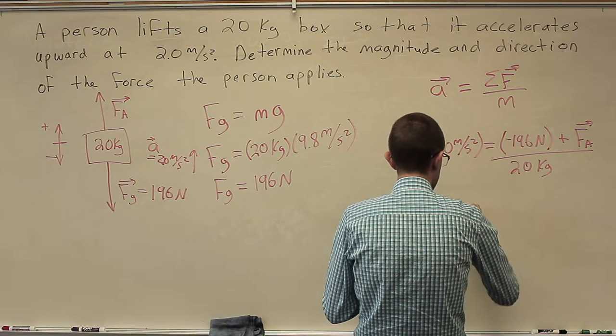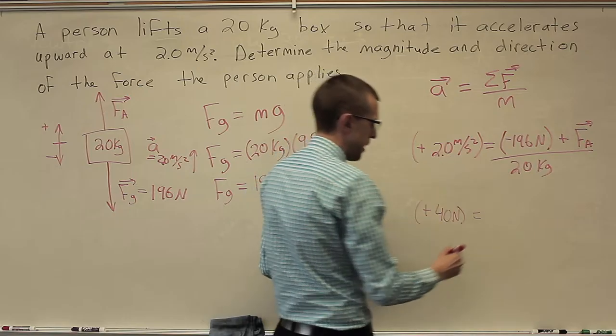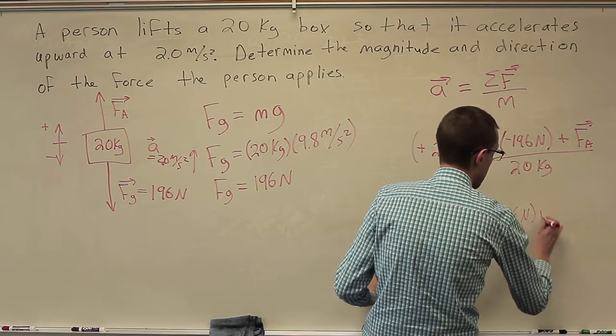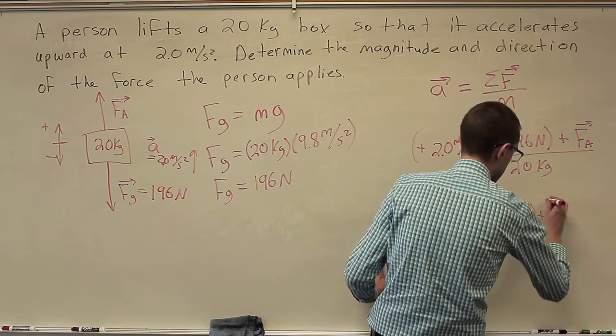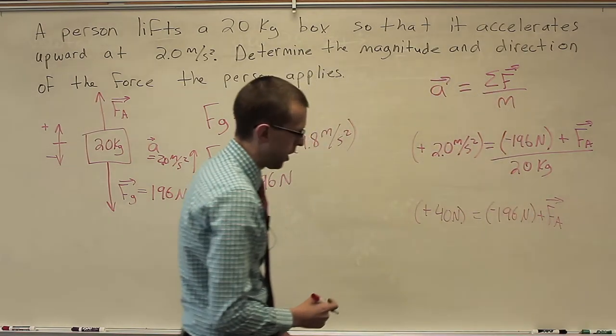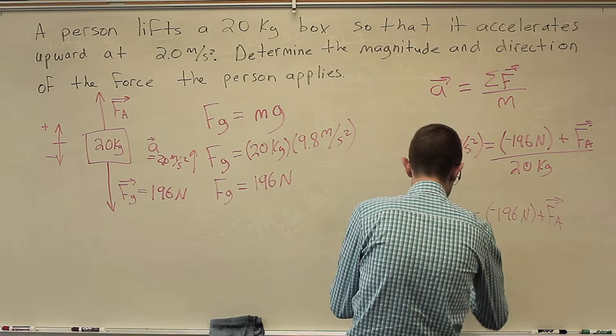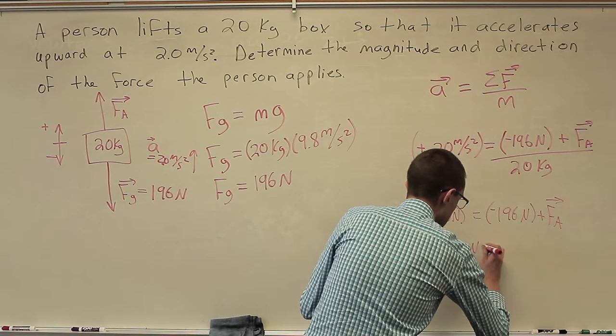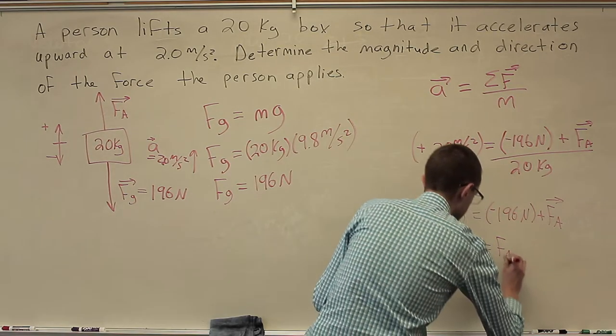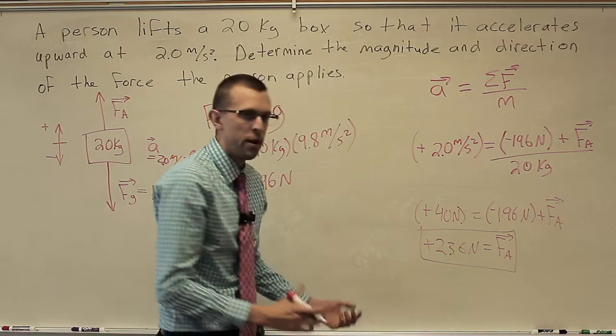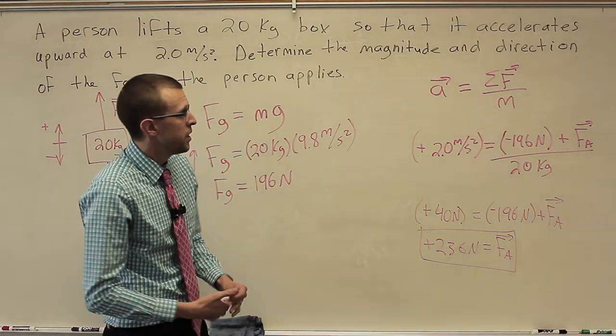Now, if I multiply both sides by 20 kilograms, I'll find on the left side 40 and then the kilogram meters per second squared. So that's going to be positive 40 newtons is equal to negative 196 newtons plus F A. And we add 196 newtons to both sides and we get positive 236 newtons.